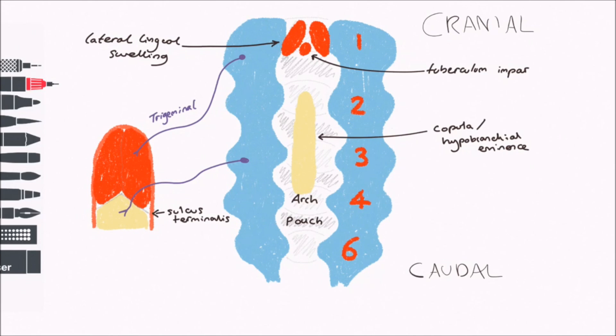The posterior one-third is supplied by the glossopharyngeal nerve, the nerve of the third arch. Special sensory innervation for taste is via the chorda tympani of the facial nerve, the nerve of the second arch.